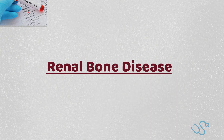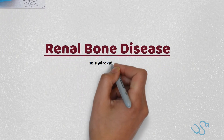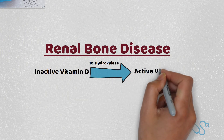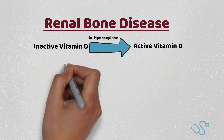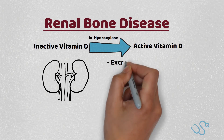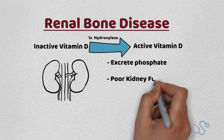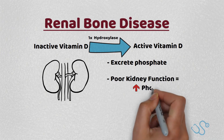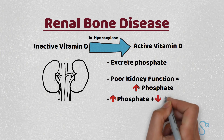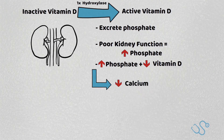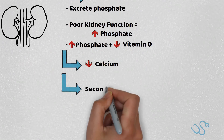Moving on to renal bone disease. Going back to medical physiology, we need to remind ourselves of the role of the kidney in bone profile management. Typically, 1-alpha hydroxylase is the enzyme that converts inactive vitamin D to activated vitamin D in the kidney. Therefore in CKD we get low vitamin D. Additionally, the kidney plays an important role in phosphate excretion, so poor renal function means rising phosphate. This gives us a raised phosphate and low vitamin D, which in turn causes low calcium — which we typically see in secondary hyperparathyroidism.